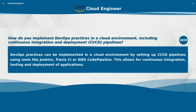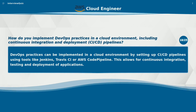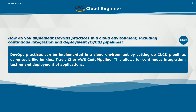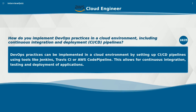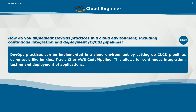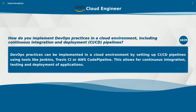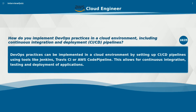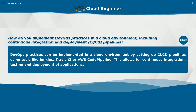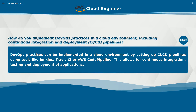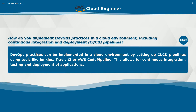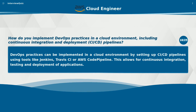How do you implement DevOps practices in a cloud environment, including continuous integration and deployment (CI-CD) pipelines? DevOps practices can be implemented in a cloud environment by setting up CI-CD pipelines using tools like Jenkins, Travis CI or AWS CodePipeline. This allows for continuous integration, testing and deployment of applications.